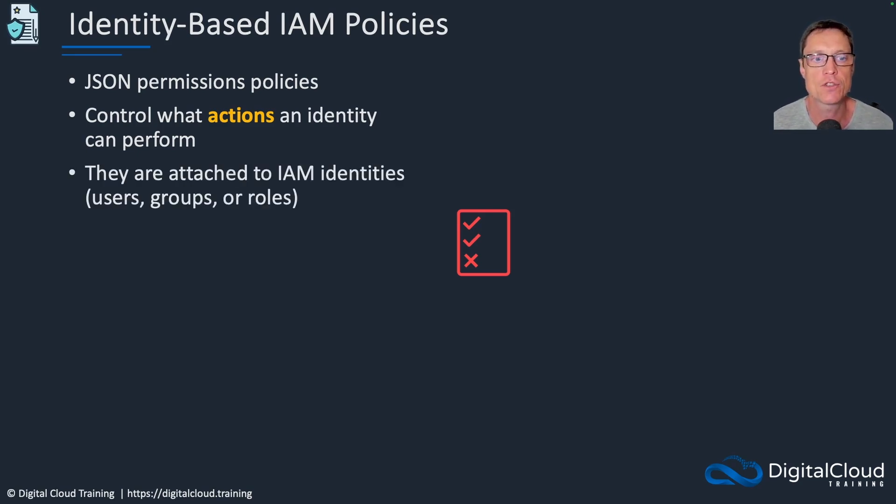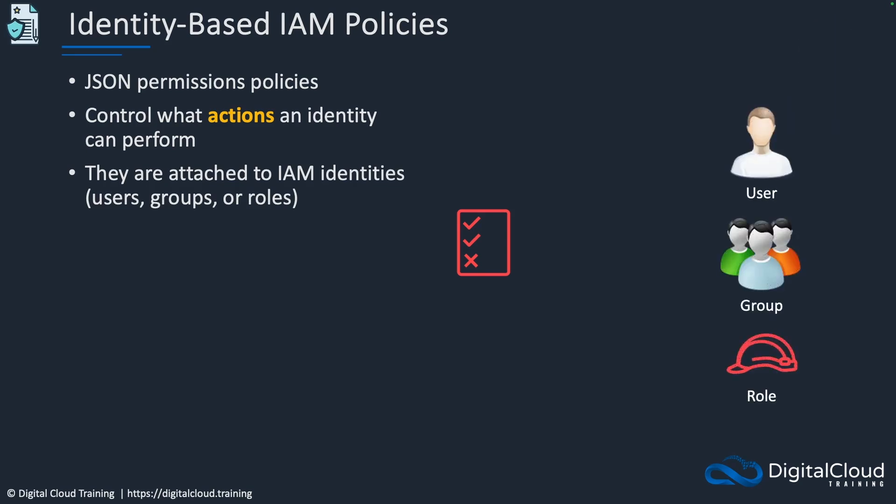Identity-based policies are attached to IAM identities: users, groups, and roles. We can apply permissions policies directly to each of these elements within IAM. If we have specific settings to apply to a user, we can attach a permissions policy directly to the user. Otherwise, if it's the same set of permissions needed for users in a particular department, we can put those users in a group and apply the permissions policy there instead.